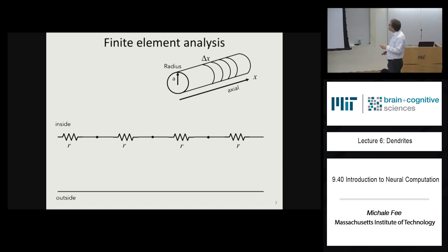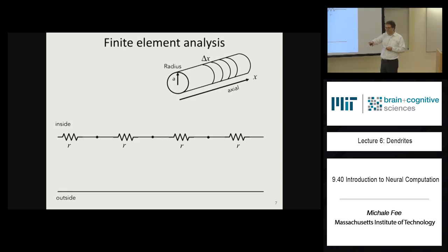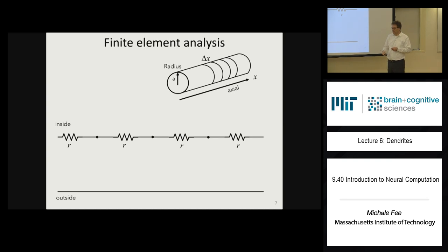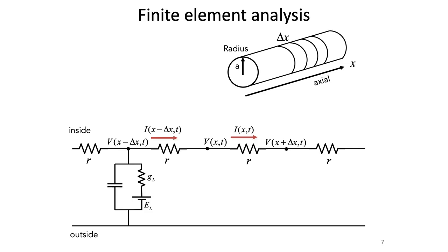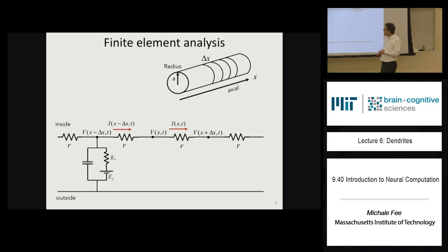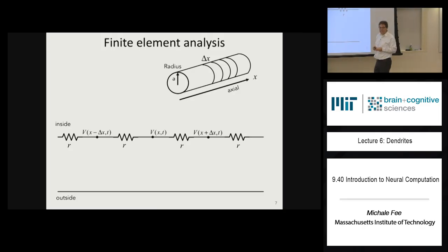Now we have to model the membrane. We're going to have a capacitance and an ion-selective ion channel with some conductance G sub L and reversal potential E sub L. We'll write down the voltage in each one of our little slices of the dendrite as V at position x and time t, with adjacent slices at V(x + Δx, t) and V(x − Δx, t). The current going axially through a slice is I(x, t).